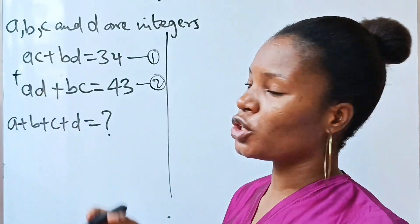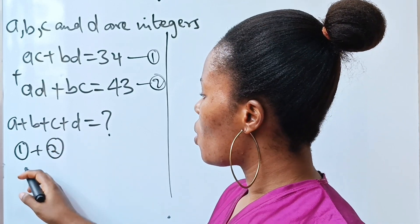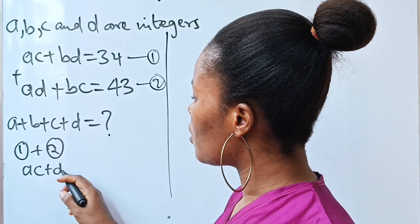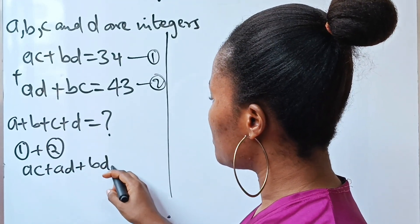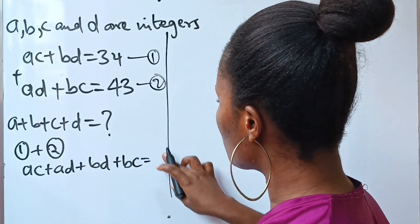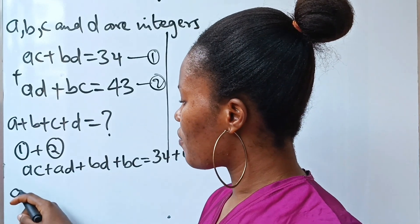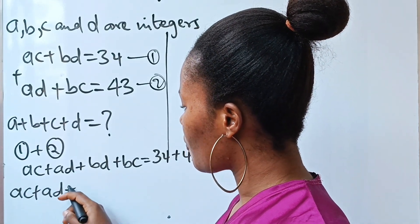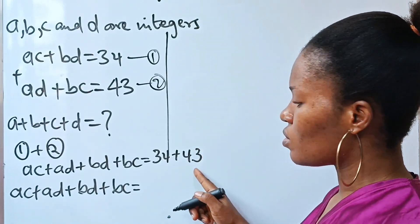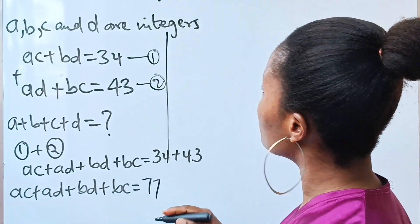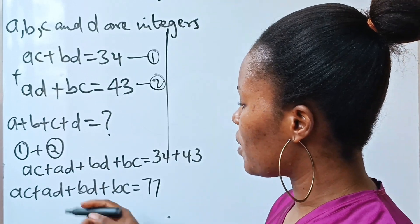Let's add equation one to equation two. Equation one plus equation two gives us: ac + ad + bd + bc = 34 + 43, which equals 77.